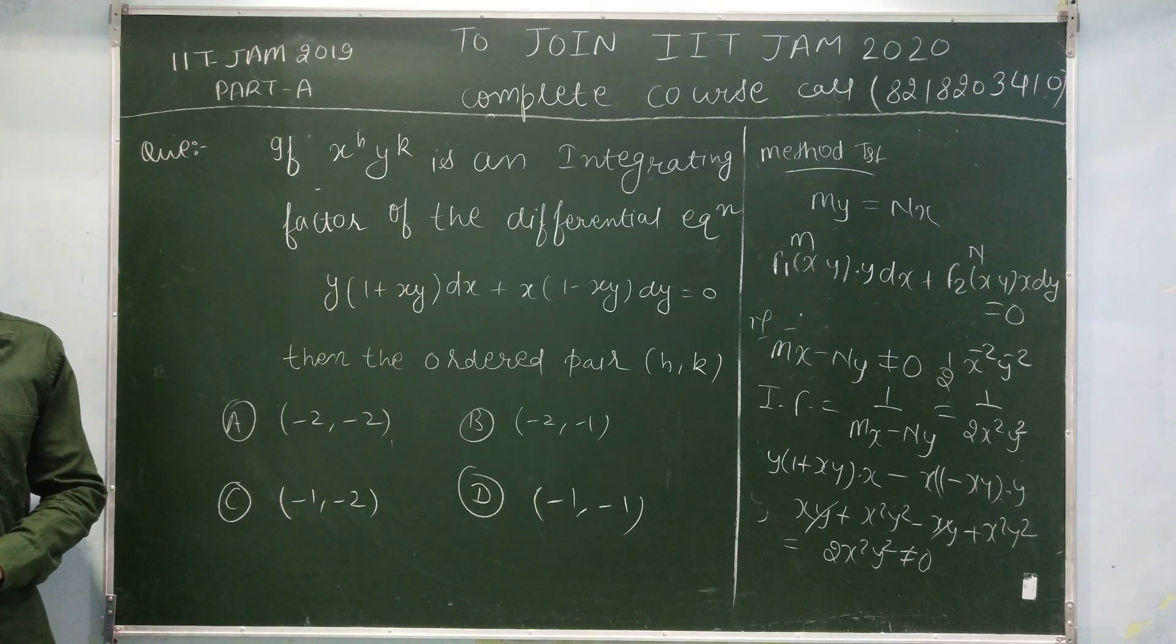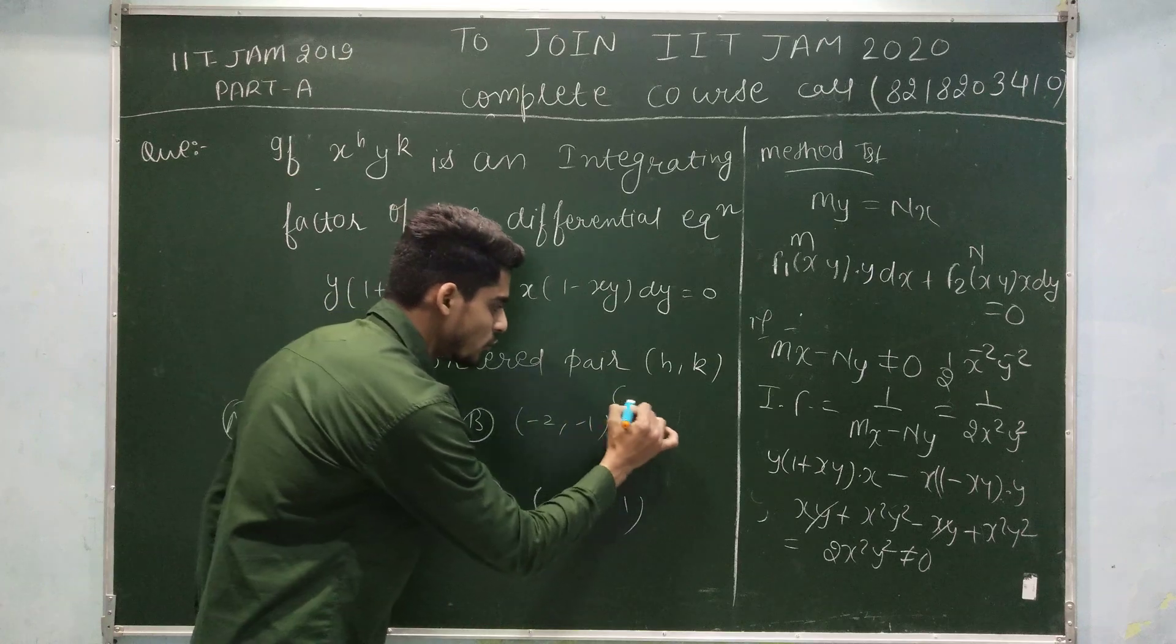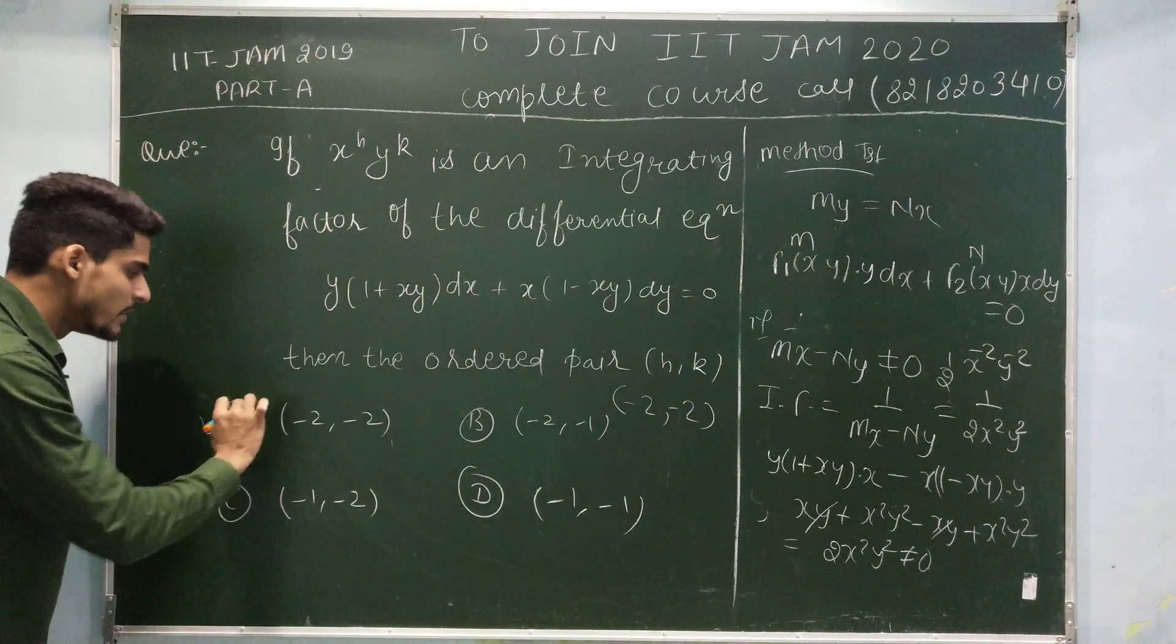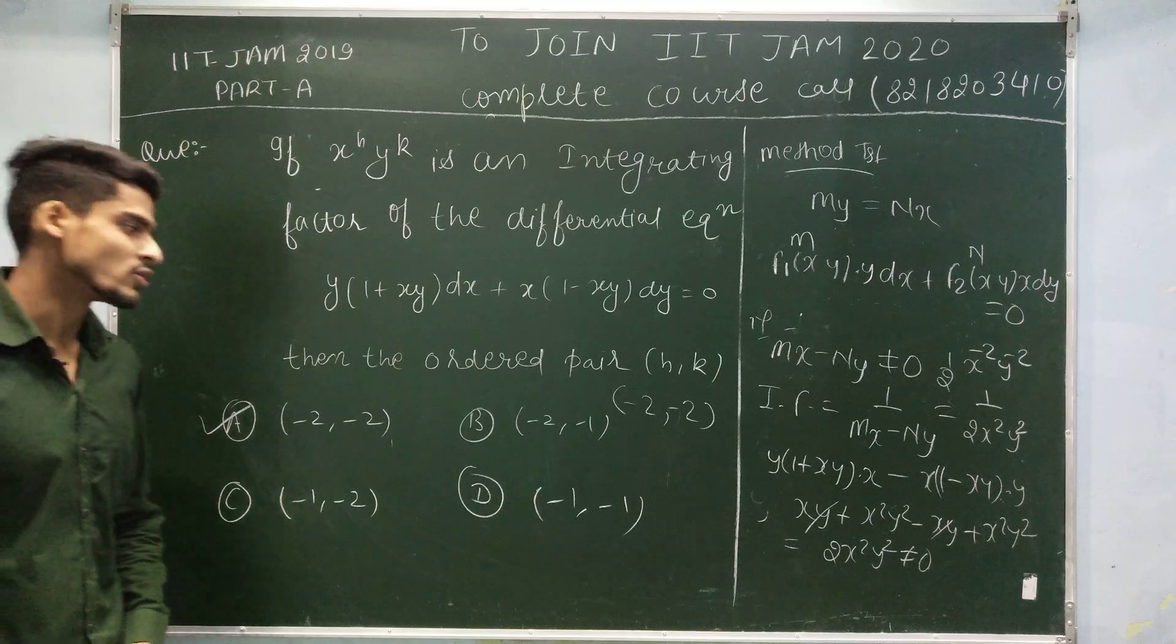Then the ordered pair h, k is. h, k must be equal to minus 2, minus 2. Then the correct option will be option a, minus 2, minus 2.